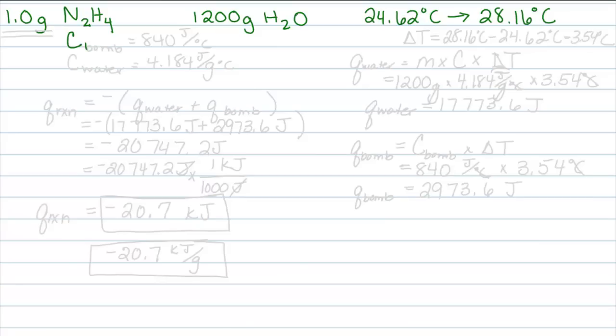We're also told the specific heat of the bomb is 840 joules per degree Celsius and the specific heat of the water is 4.184 joules per gram degree Celsius. To calculate the Q of the reaction, and the reaction is the combustion of hydrazine, burning of hydrazine.